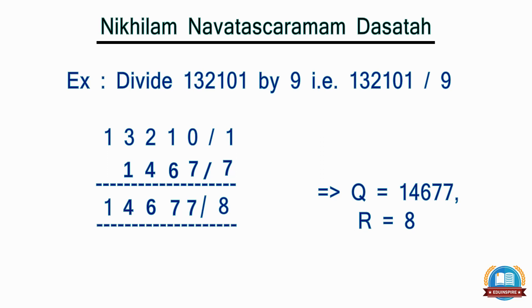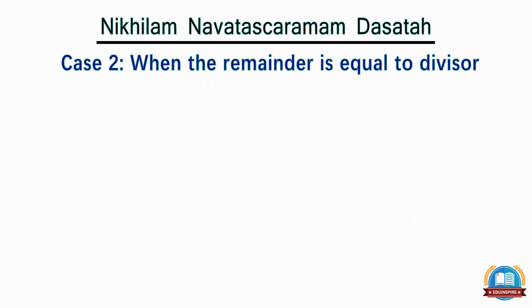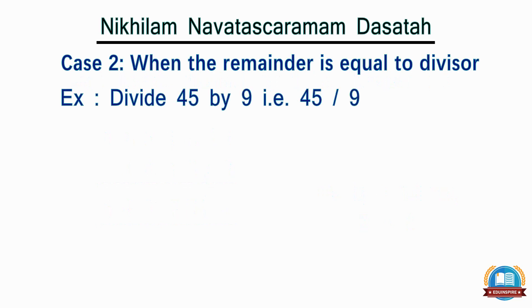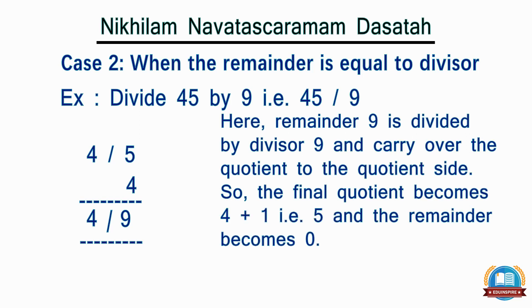Now let's go through the second scenario where the remainder is equal to the divisor. Let's take the example of dividing 45 by 9, following exactly the same steps. This gives the quotient as 4 and remainder as 9. Now remainder 9 is divided by divisor 9 and we carry over the quotient to the quotient side. So the final quotient becomes 4 plus 1, that is 5, and the remainder becomes 0.